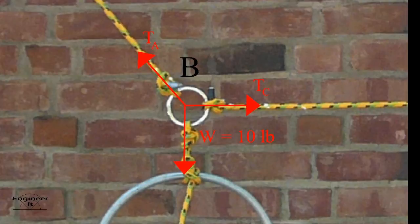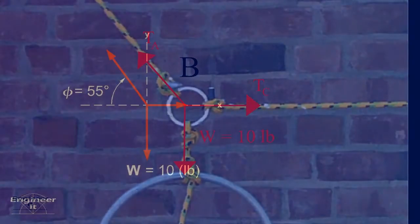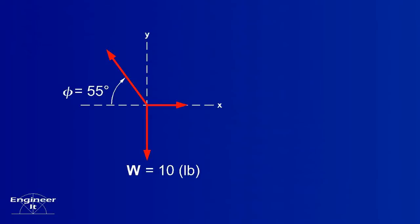Isolate these forces and drop everything else from the picture. Draw axes to reference the angle of the ropes. Axes are usually needed in statics. Now apply the equations of equilibrium.